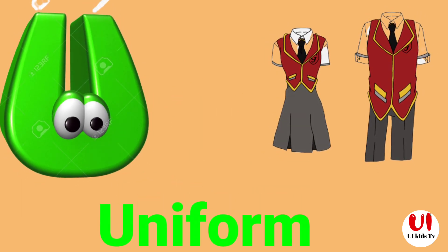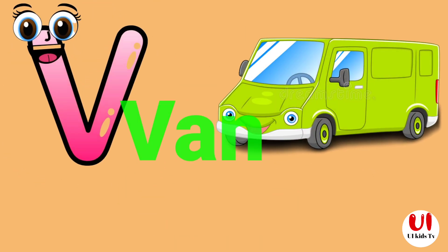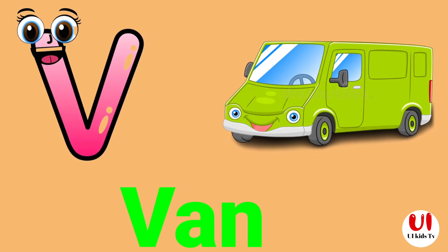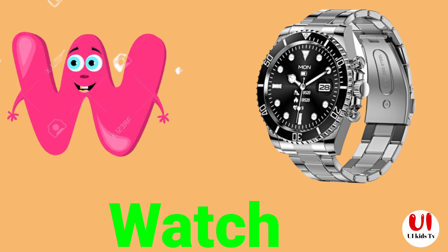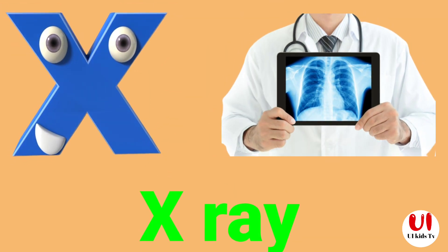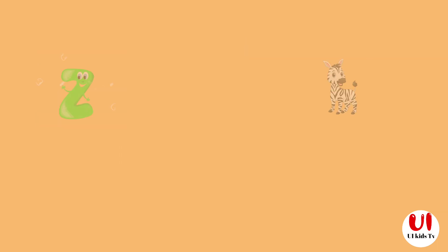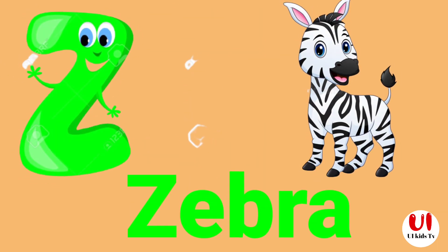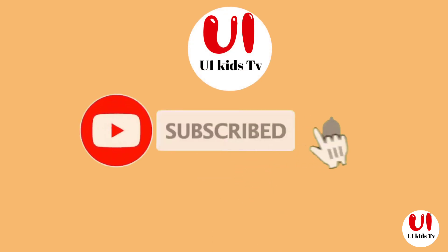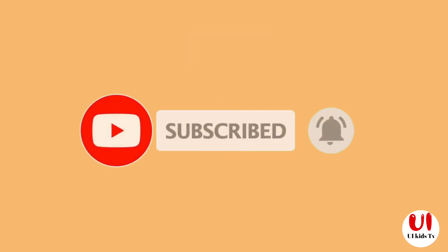U for uniform. V for van. W for watch. X for x-ray. Y for yak. Z for zebra.